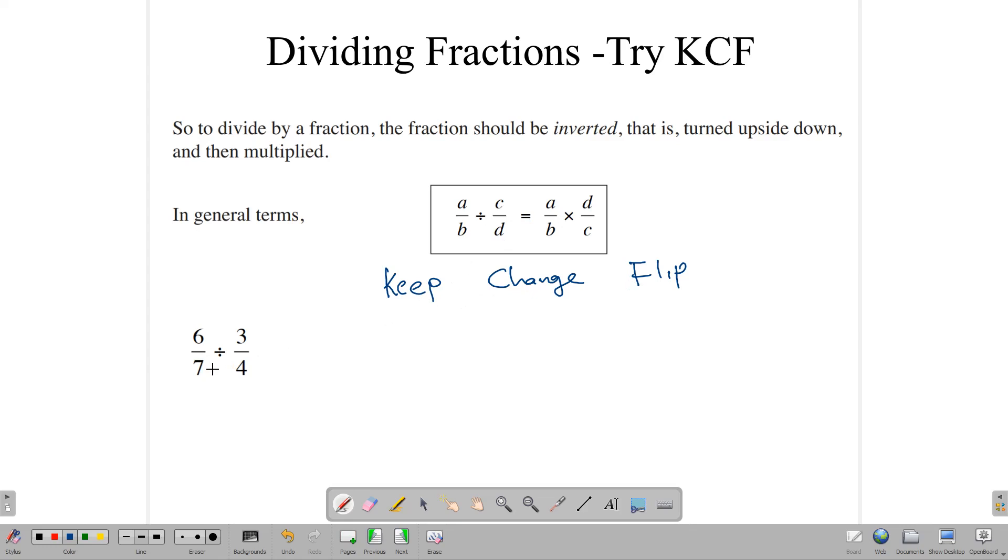Let's try it out on this question. So, 6 over 7, we are going to keep it. Divide, we are going to change it to multiplication. And flip means that we are going to turn this upside down. So, rather than 3 over 4, we are going to have 4 over 3.